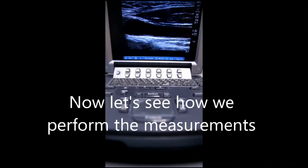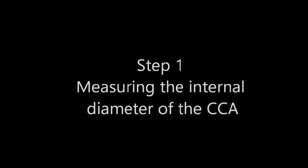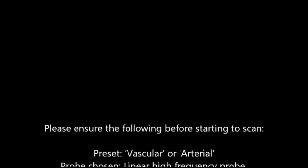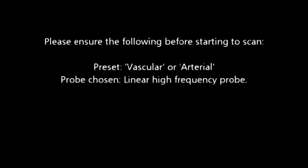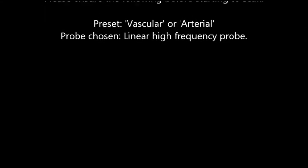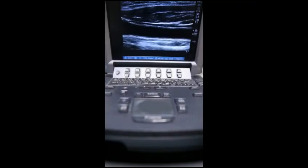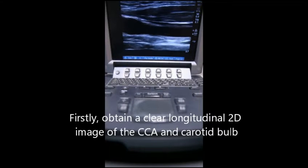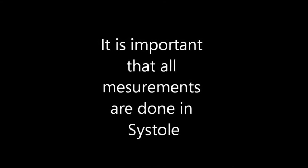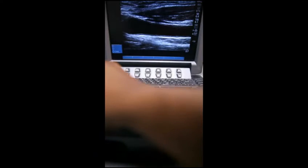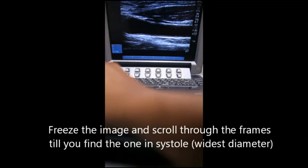The thin white lining of the vessel is the endothelium. The first step is to measure the internal diameter of the vessel. Once a good 2D image of the artery near the bulb is obtained, freeze the image. Now scroll through the frames using the wheel until the systolic frame, which is also the widest diameter, is identified. All measurements are done in this diameter.